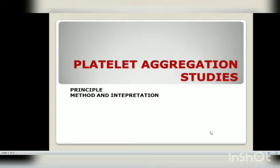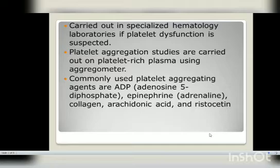In this video we will talk about platelet aggregation studies — covering the principle, methods, and interpretation. Platelet aggregometry is carried out in specialized hematology laboratories when platelet dysfunction is suspected. These studies are carried out on platelet-rich plasma (PRP) using an aggregometer. Commonly used platelet aggregating agents are ADP, epinephrine, collagen, arachidonic acid, and ristocetin.